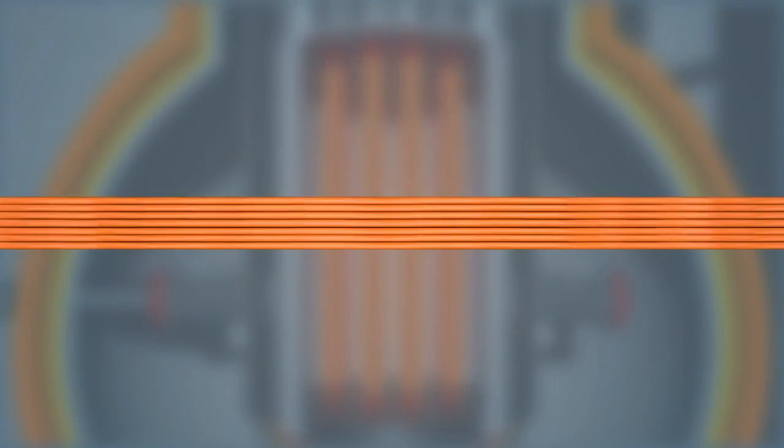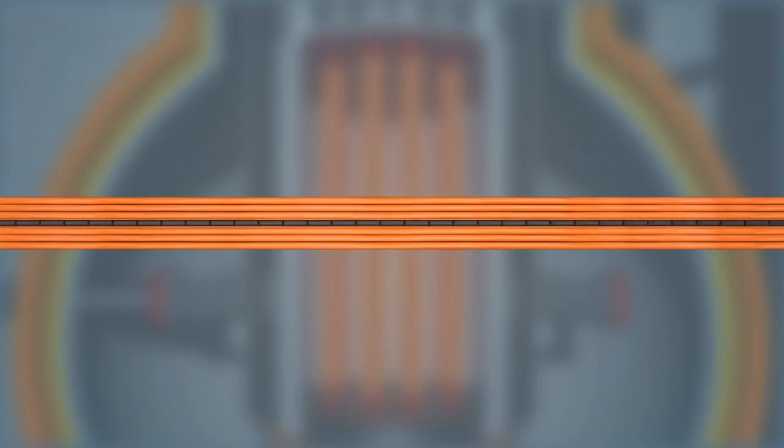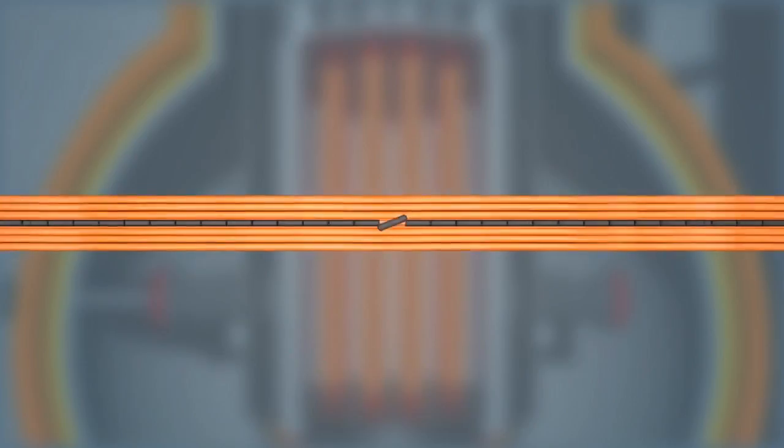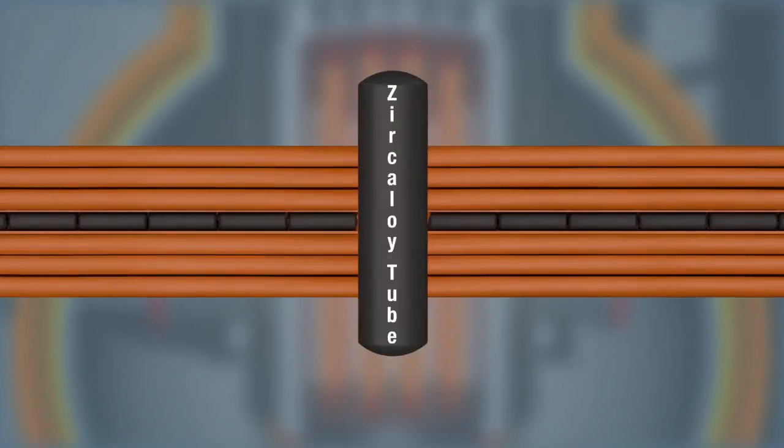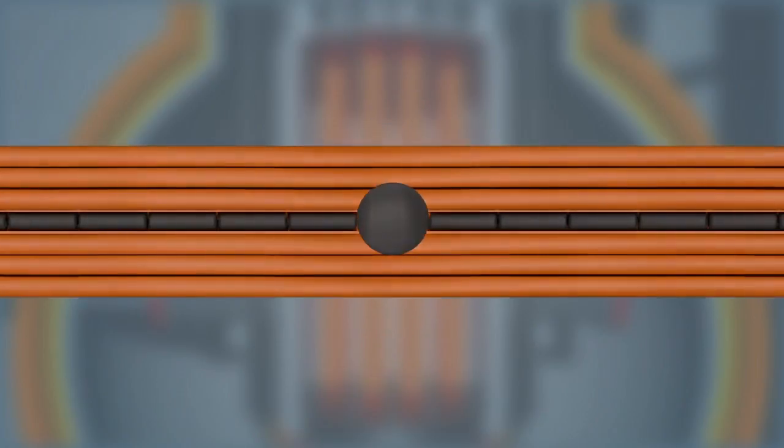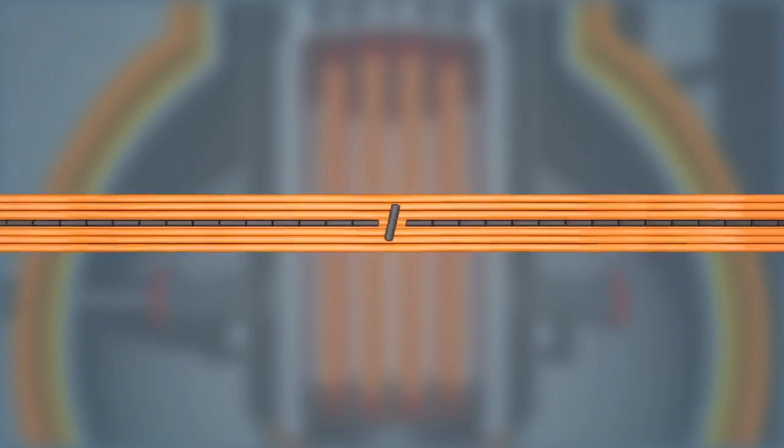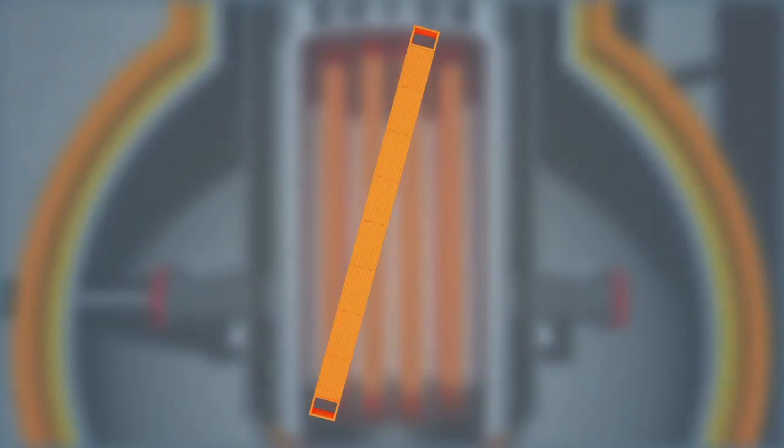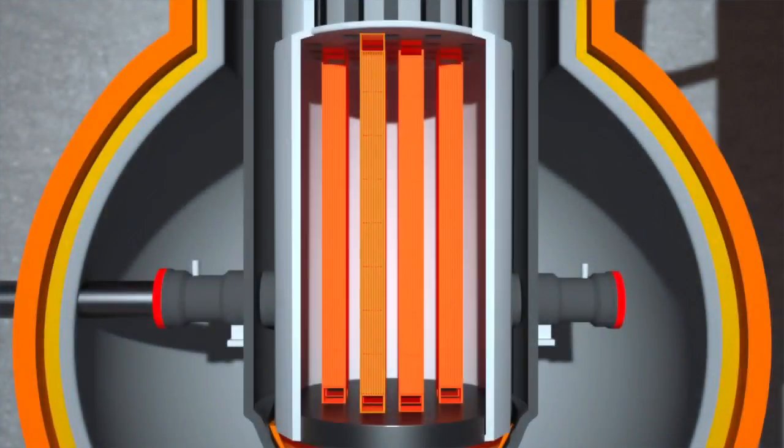Fuel elements consist of cylindrical rods put into bundles. A uranium oxide ceramic is formed into pellets and inserted into zirconium alloy tubes that are bundled together and contain fissionable nuclei of uranium-235 or uranium-238. The number of rods varies greatly according to the size of the reactor. The fuel elements are placed inside the reactor core.